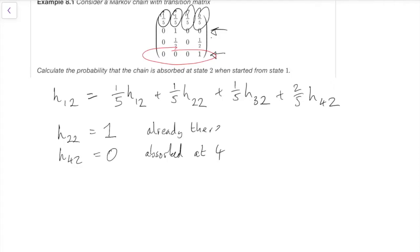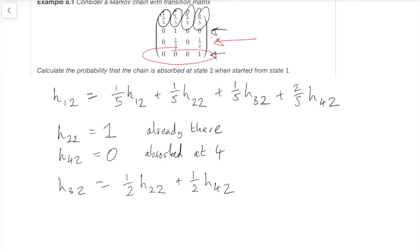For H(3,2), we condition on the first step again using the third row of the matrix. There's no probability of going to 1, probability 1/2 of going to 2 giving H(2,2), no probability of staying at 3, and probability 1/2 of going to 4 giving H(4,2). Since H(2,2) = 1 and H(4,2) = 0, we get H(3,2) = 1/2.